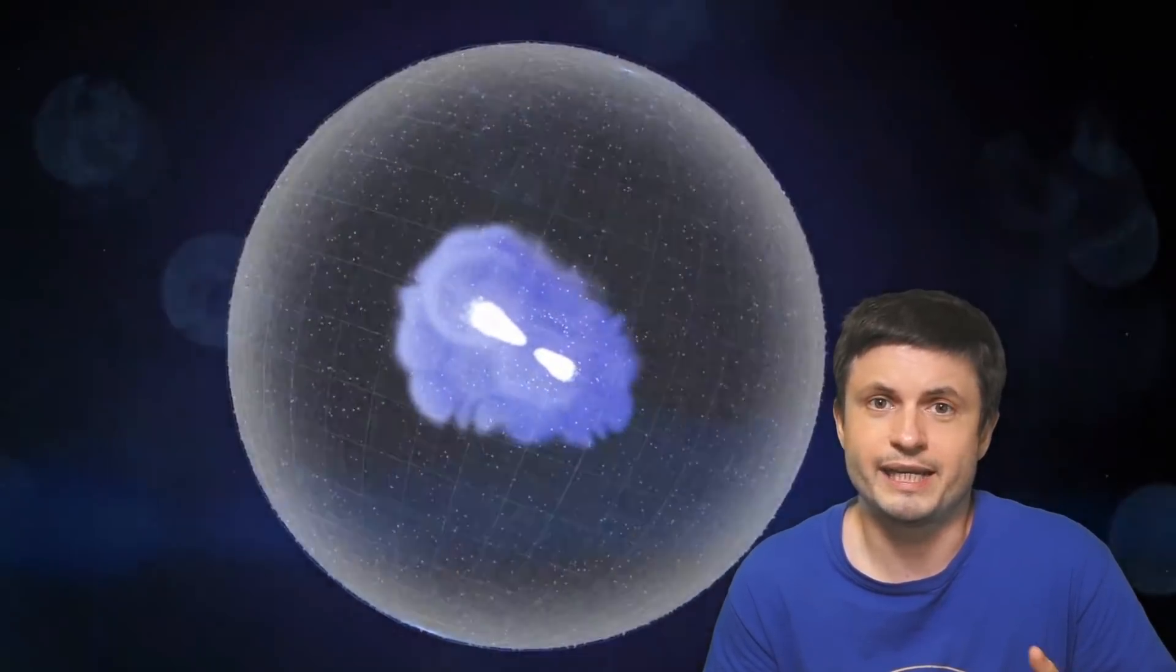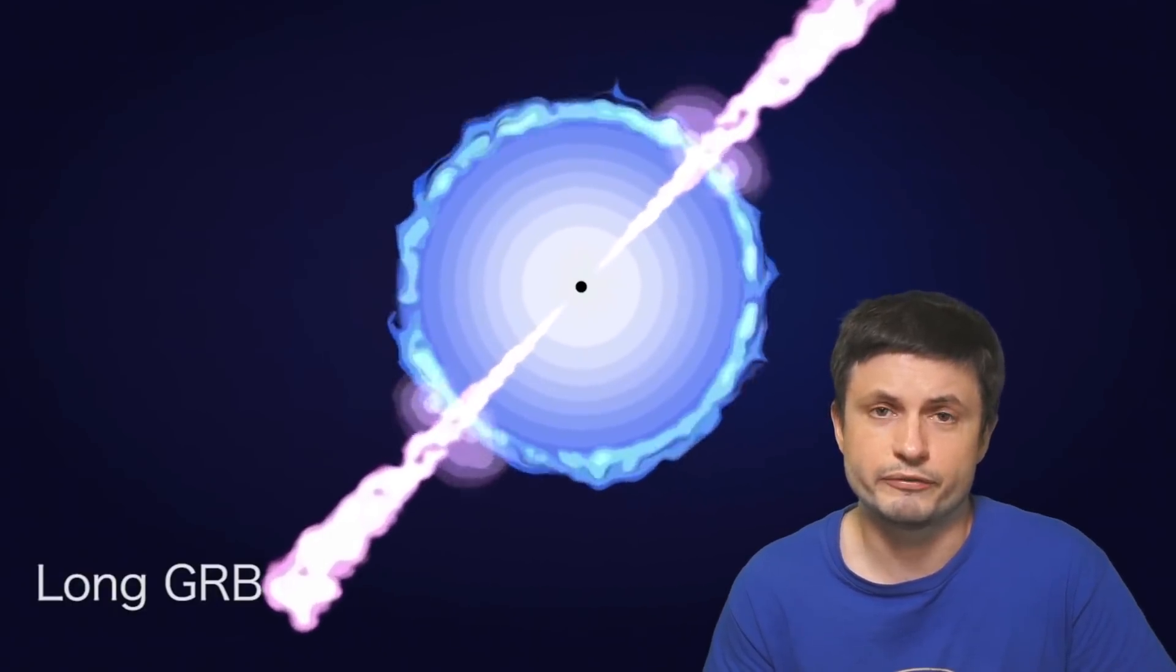But even back then nobody had any idea what exactly they were looking at. Some people thought that maybe it's actually collisions between different comets producing these unusual explosions. They were just way too powerful to be coming from another galaxy. Some people thought that maybe it was explosions of neutron stars or some unusual supernova really close to us. But we didn't really see any other observations coming from these regions.